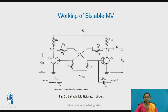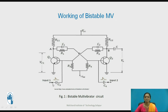When Q1 turns OFF, its collector voltage increases. This increased voltage is applied to the base of Q2. Since the base voltage is now greater than 0.7V, Q2 turns ON. As Q2 is ON, it enters the saturation region, and its collector voltage reduces, giving a logic zero signal at its output. This is the second stable state.